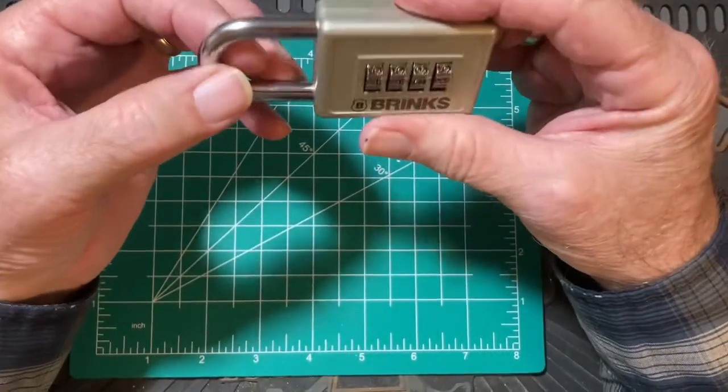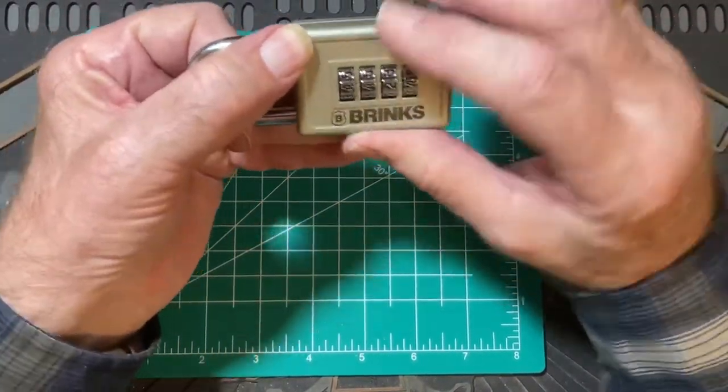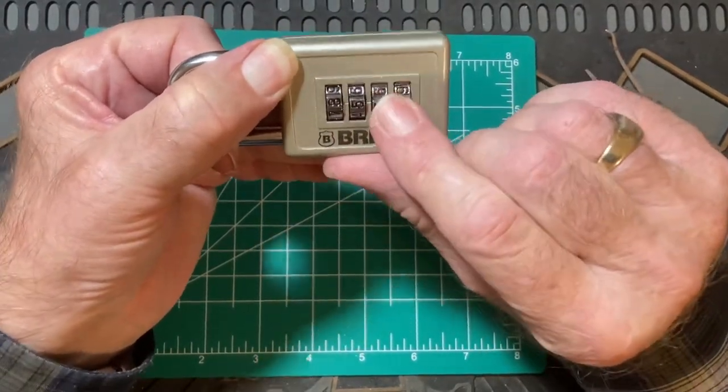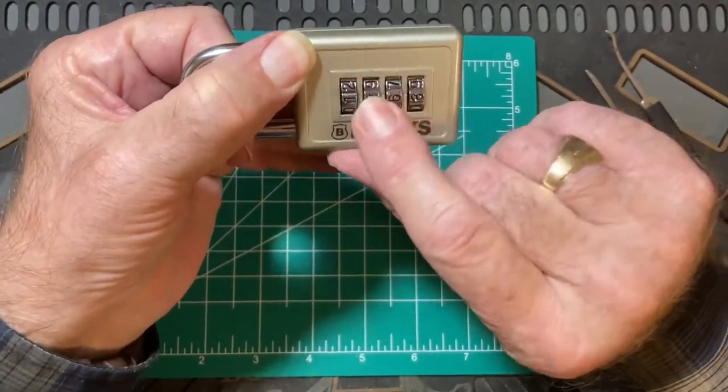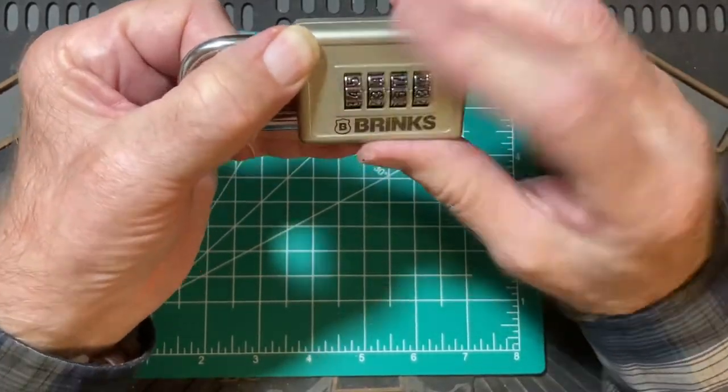And I'll tell you the ways you can't bypass it. You can't pull on the shackle and rotate the wheels to find a binding wheel, because they don't bind. No matter what you do, how hard you pull, they won't bind.